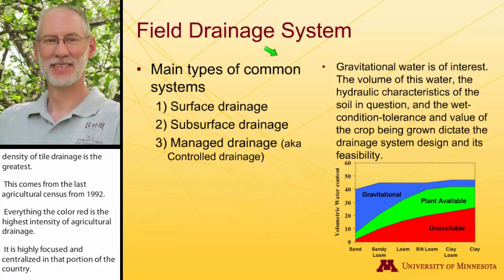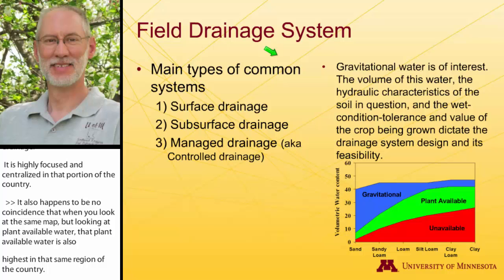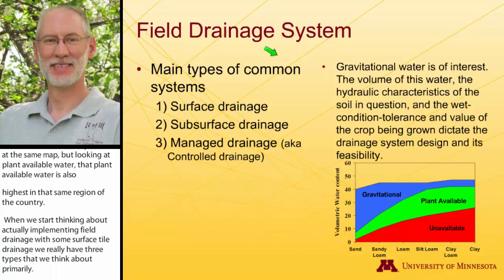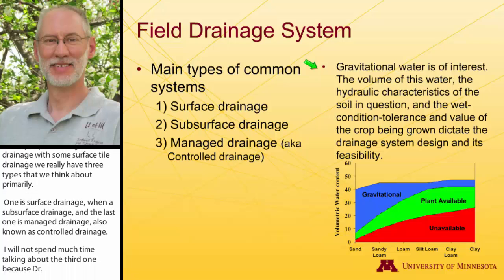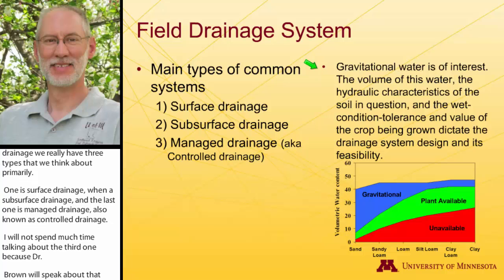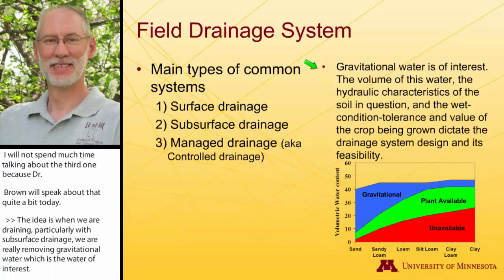When thinking about implementing field drainage with subsurface tile drainage, we really have three types to consider primarily: surface drainage, subsurface drainage, and managed drainage, also known as controlled drainage. The idea is that when we're draining, particularly with subsurface drainage, we're really removing gravitational water — the water that is least held tightly in the soil profile. When we use drainage systems, whether surface, subsurface, or controlled managed drainage, it's that gravitational water we're trying to affect.